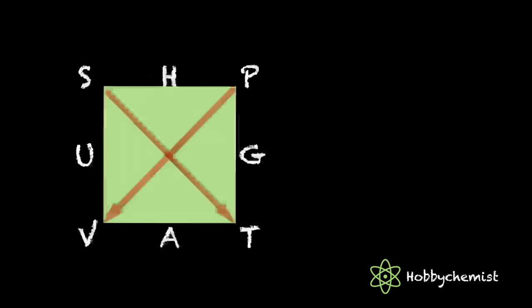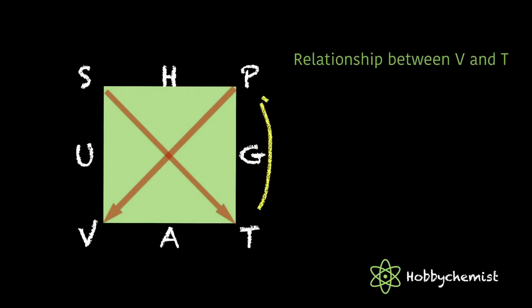Now let's look at how we can make another set of relations using different parameters. Here we started from T in anti-clockwise direction and from the next point V in the clockwise direction.